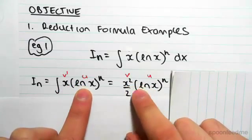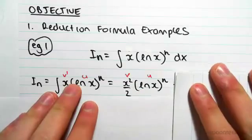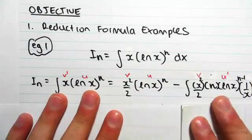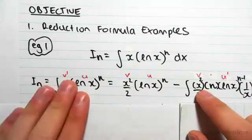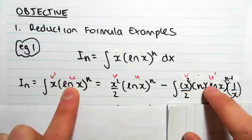u is u, so we just put u there, so (ln x)^n minus the integral of v, so we need to integrate v' to get v, so it's x^2/2, and we need to find u'.